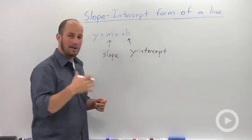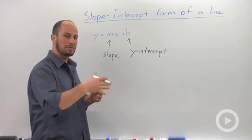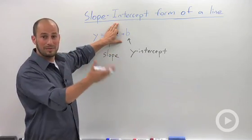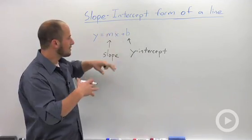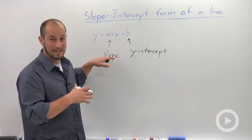Now remember how we find intercepts: we plug in zero for the other thing. So to find the y-intercept we would plug in zero for x. We plug in zero for x, this goes away, leaving us with just y equals b. So it's really not any mystery that this is the y-intercept, just what happens when we calculate it out.